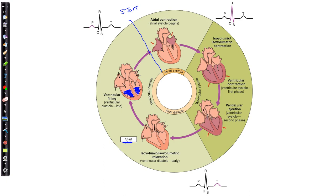Blood is filling up those ventricles — coming in through the vena cava and the pulmonary veins with the AV valve open, pouring straight down into the ventricles. If we start our cardiac cycle with atrial contraction, what that atrial contraction does is fill the ventricles up the rest of the way, packing them as full of blood as possible. Atrial systole fills them the last portion, since most of that filling happened during ventricular diastole.